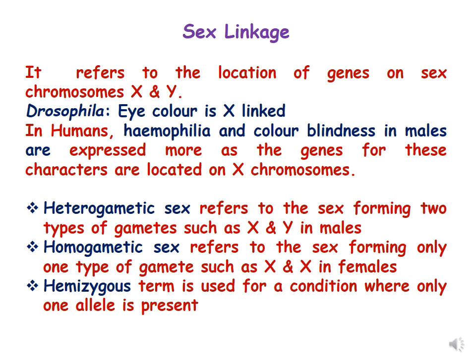The term hemizygous is used for a condition where only one allele is present — for example, the genes which are present on the Y chromosome in males.